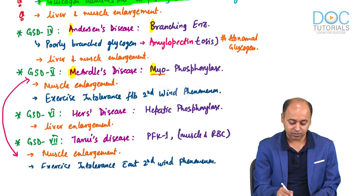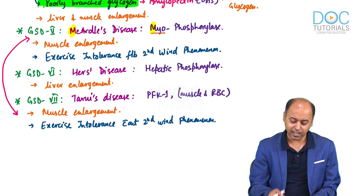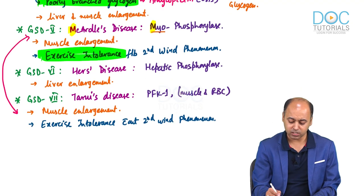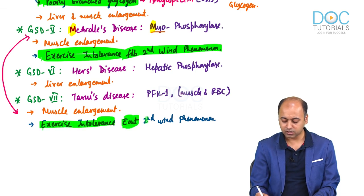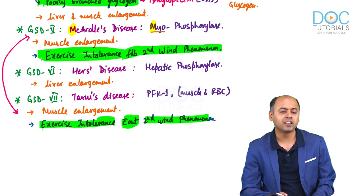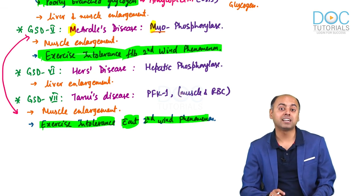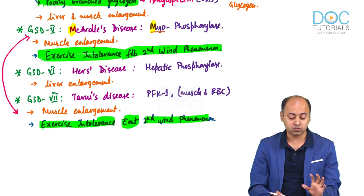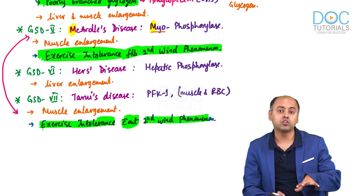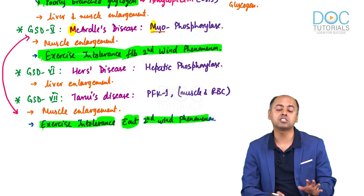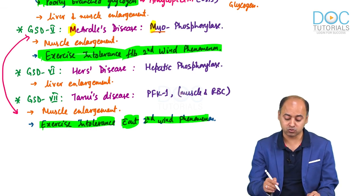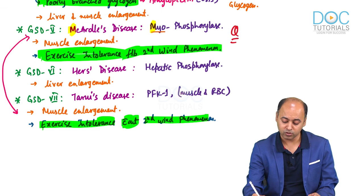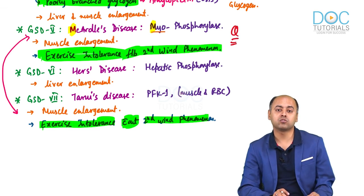For type 4: poorly branched glycogen (amylopectinosis). For type 5: exercise intolerance associated with second wind phenomenon. For type 7: exercise intolerance without second wind phenomenon. These are the highlights with which you can distinguish between the different glycogen storage disorders. Every exam will have at least one clinical case from glycogen storage disorder — they almost always come as clinical cases, not single-line questions.